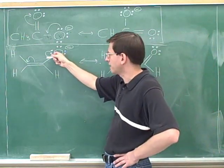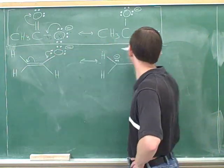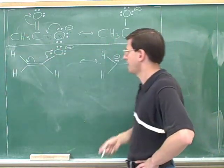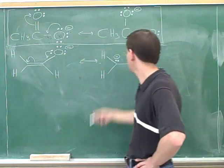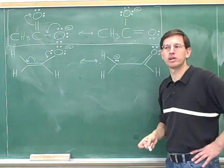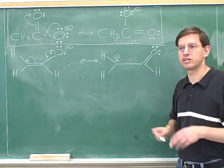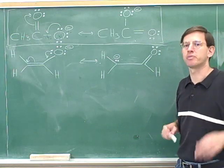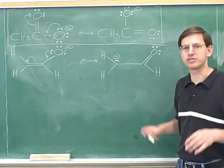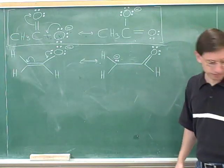Now since this oxygen has electrons moving away from it, it's become less negative. And since this carbon has electrons going towards it, it's become more negative. Remember the whole point of drawing the resonance structures is to determine where the charges are, so that's something we have to stay focused on.